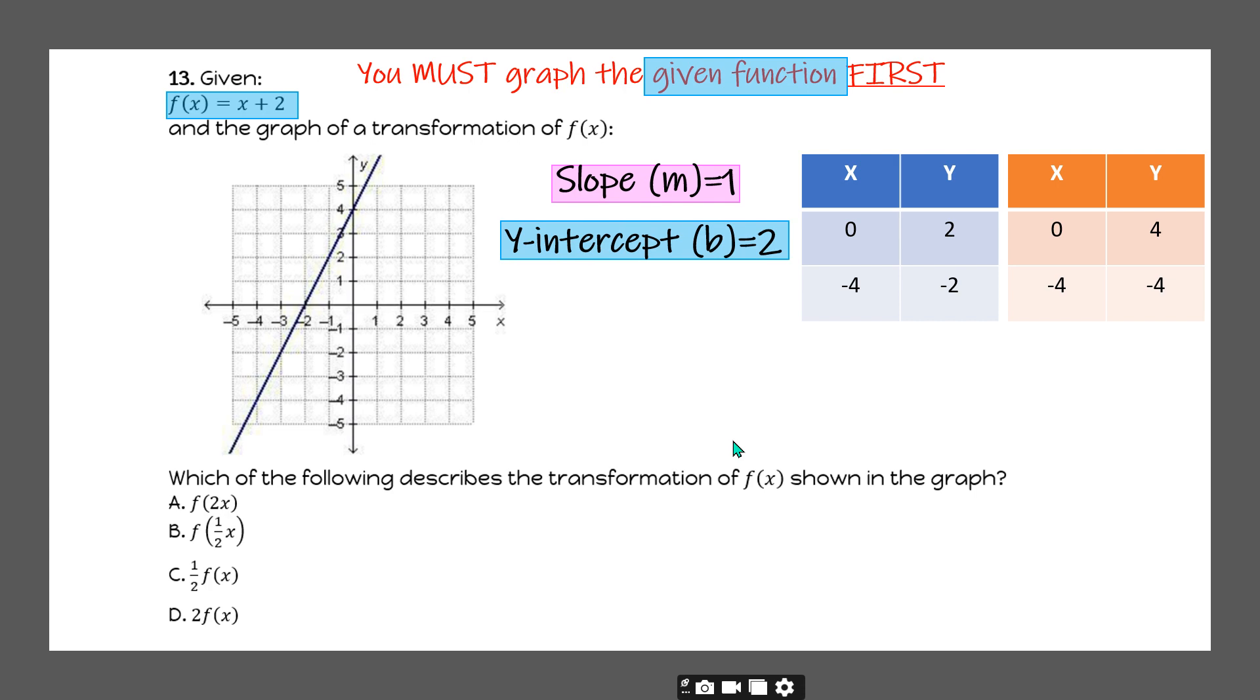So if I'm given f(x)=x+2, and I'm going to graph that function, I'm going to start with the y-intercept of 2, and then I'm going to move the slope up 1 over 1, down 1 over 1, connect my points.